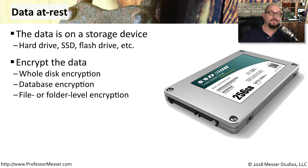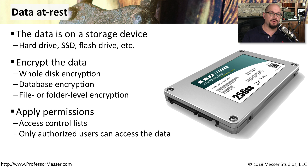But sometimes you don't need to encrypt everything on the drive. If this data is in a database, you can encrypt the entire database or a portion of that data. Or you can encrypt the data before storing it — we call this file or folder level encryption, where only the information you're storing on the drive will be encrypted and the remaining part of the drive remains in the clear. It's also common to increase the security of data at rest by applying permissions, usually in the form of a group that would either allow or disallow access to this data at rest.